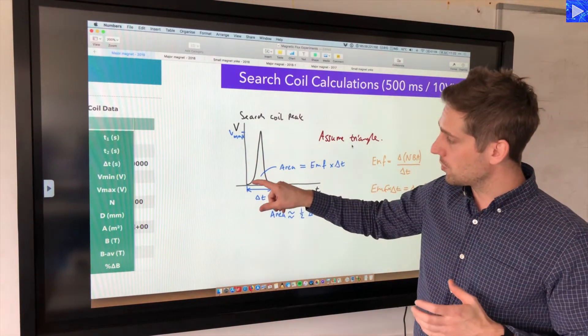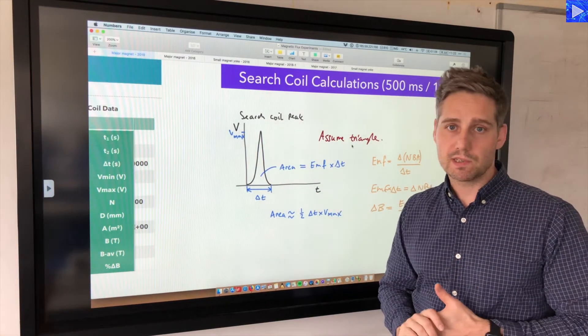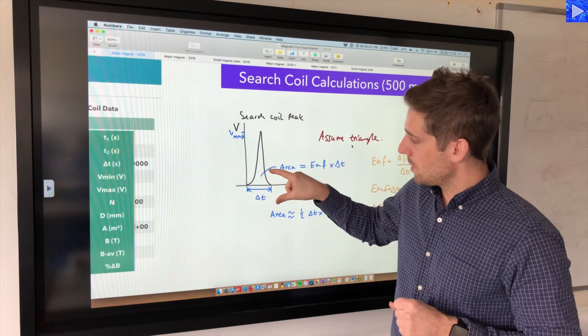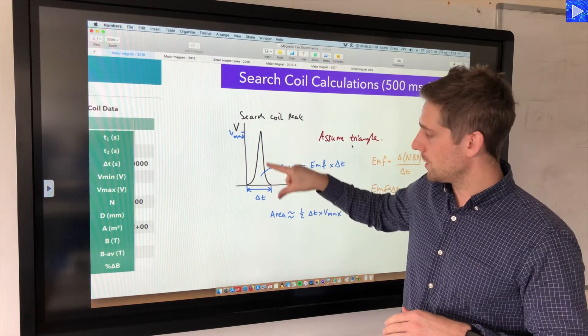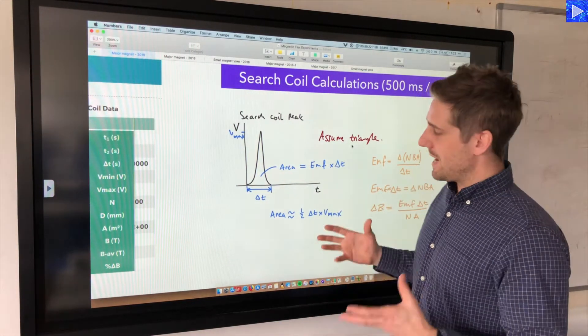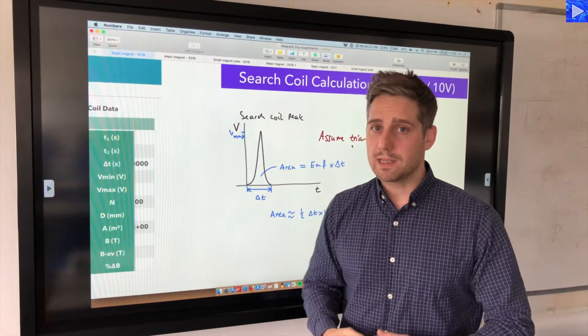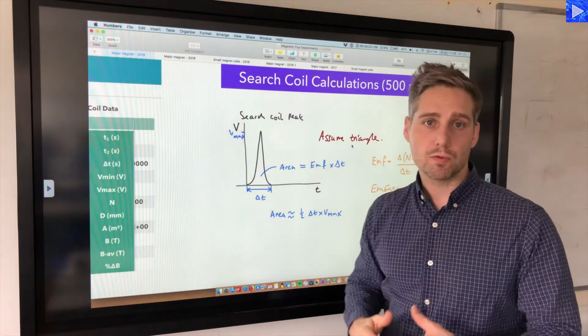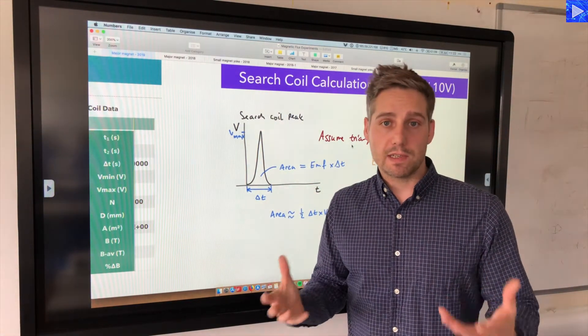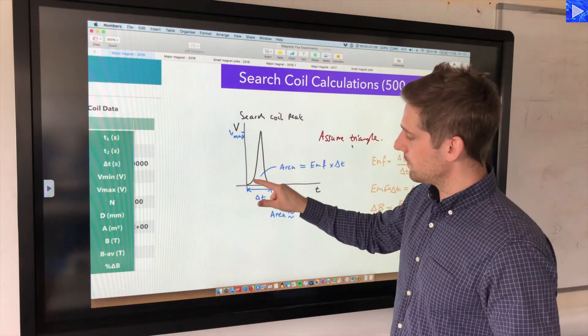If you remember what we're actually trying to do here is, I got a printout on my PicoScope, and using that I'm going to try and estimate or calculate the area under that peak. I pulled the search coil out very quickly to give me as sharp a peak as possible.